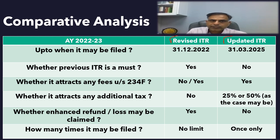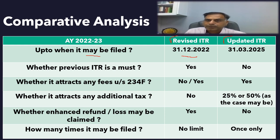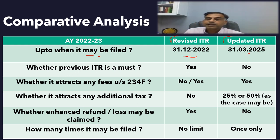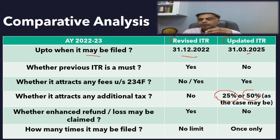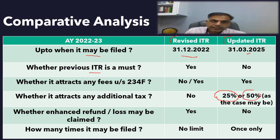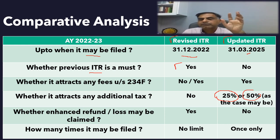The first question: when may a revised return or updated return be filed? For assessment year 2022-23, the revised return last date has already expired — that was 31st December 2022. In comparison, an updated ITR may be filed even up to 31st March 2025. If you file an updated ITR up to 31st March 2024, you will pay additional tax of 25% of tax plus interest payable. If you file beyond that but up to 31st March 2025, you will pay 50% of the tax plus interest as additional tax. For a revised ITR, an original return — whether filed on time under Section 139(1) or as a belated return under Section 139(4) — is a must.